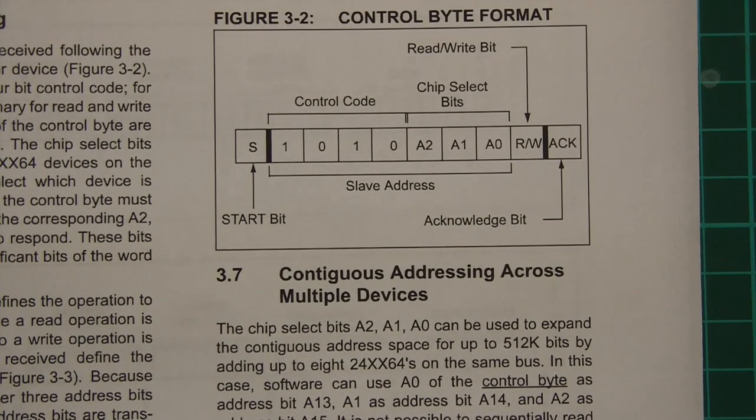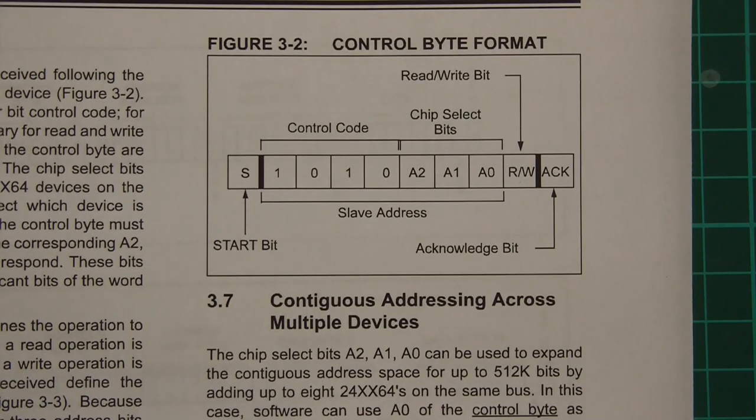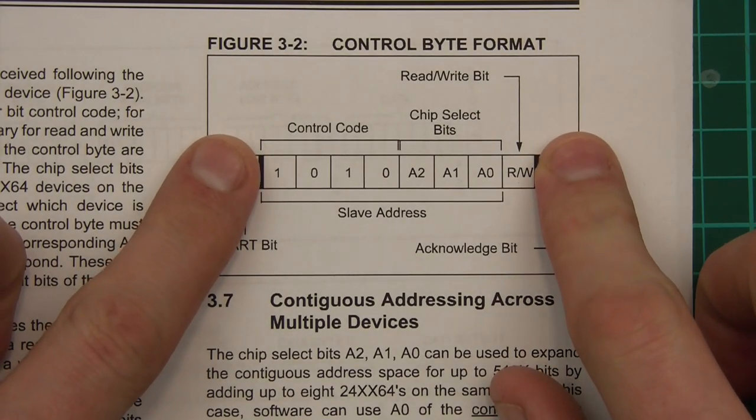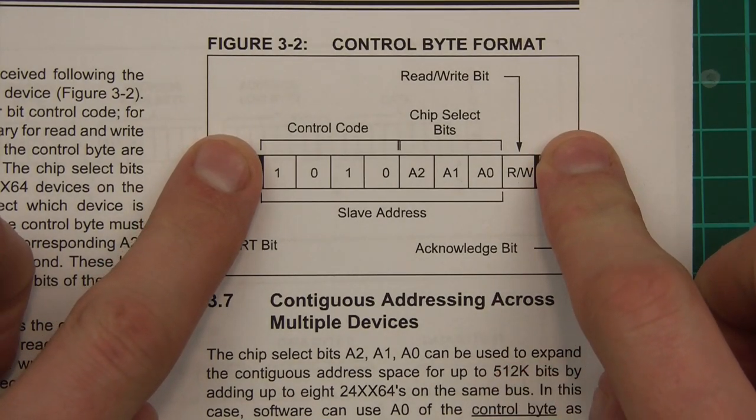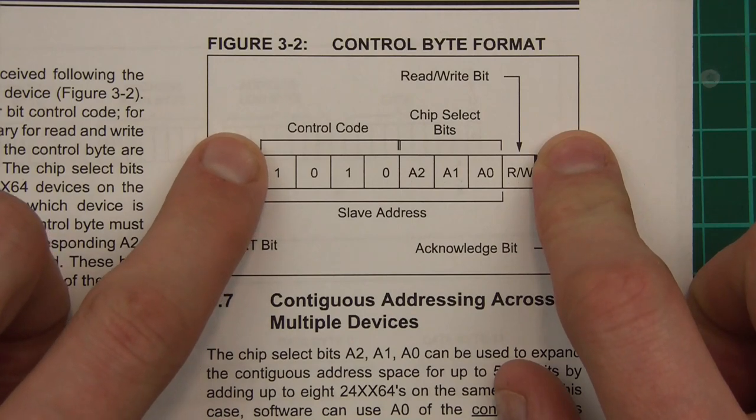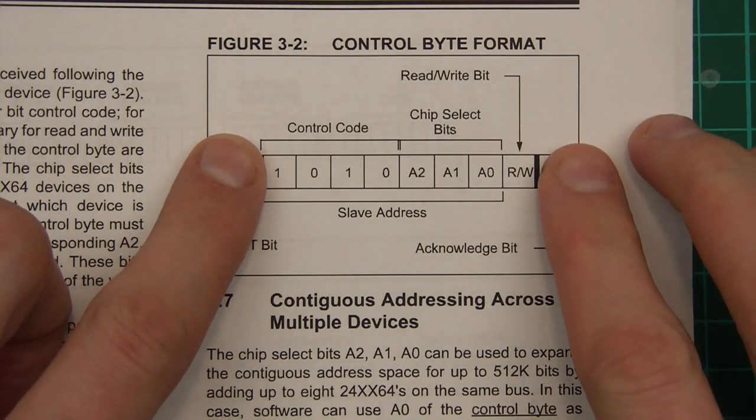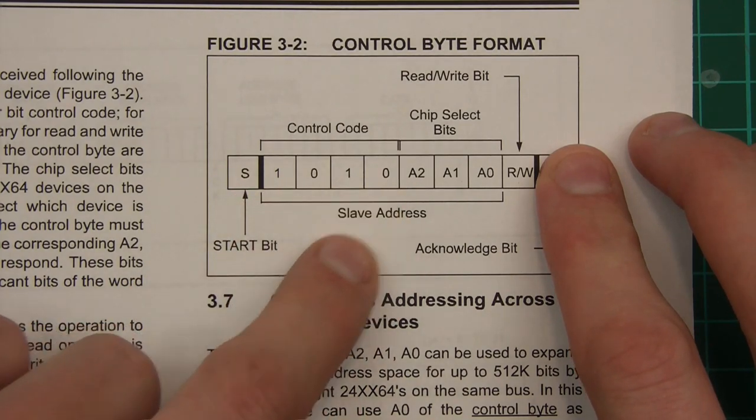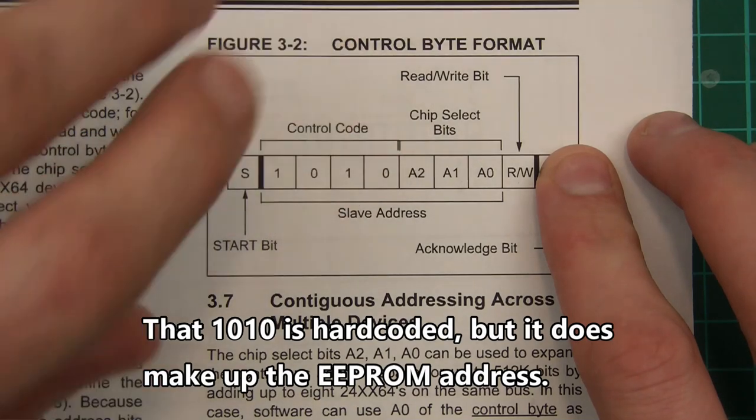Right, anyway, let's move on. So the way this thing works is that you wire it up, which I'll show you how to do in a bit, and then when you've wired it up, you send data to it, of course via the Arduino, using the I2C bus, serial bus, or whatever you want to call it. So these bits here, the start bit and the acknowledge bit, we don't need to worry about.